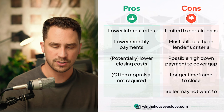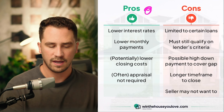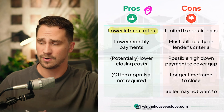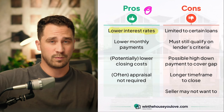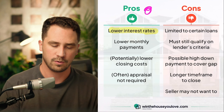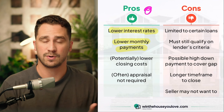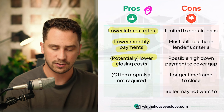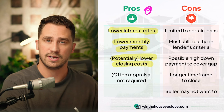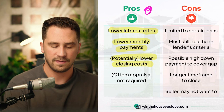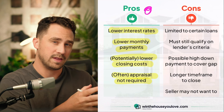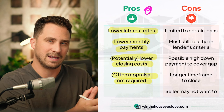Some pros: you have lower interest rates — if right now you could get 7% but by assuming a mortgage you could get 3% or 3.5%, it's going to be worth it. You also have lower monthly payments, potentially lower closing costs, and fewer origination fees. Often an appraisal is not required on a loan assumption because you're taking over the current mortgage balance, not getting a higher mortgage balance.